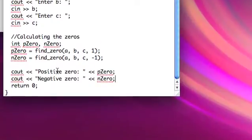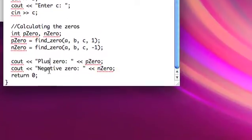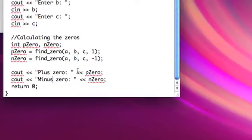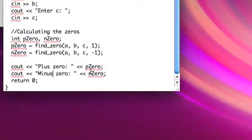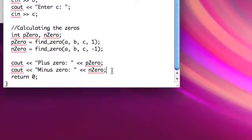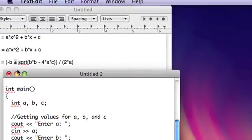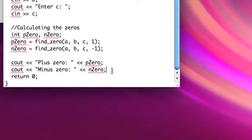Actually, we should probably call this plus 0 and minus 0, because it's possible for a positive 0 to be a negative number. So instead, we'll put plus 0 and minus 0, because this is plus or minus, so it makes more sense intuitively.